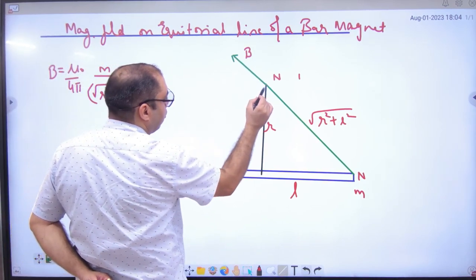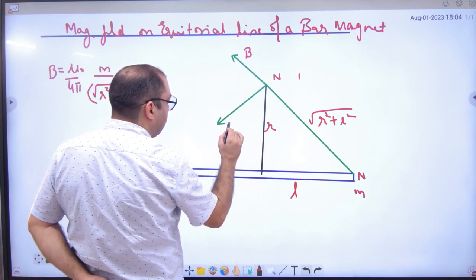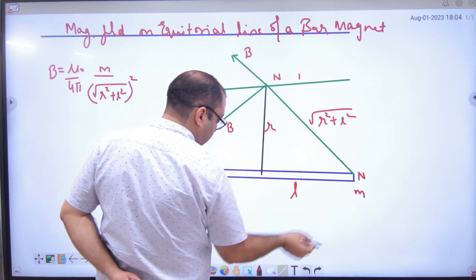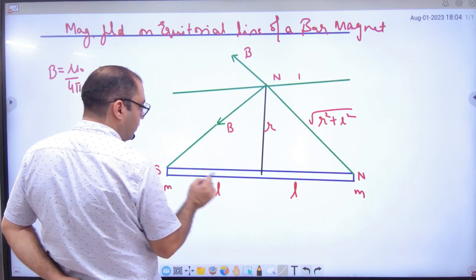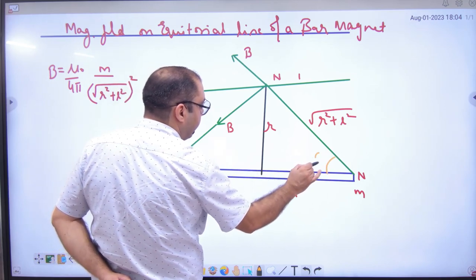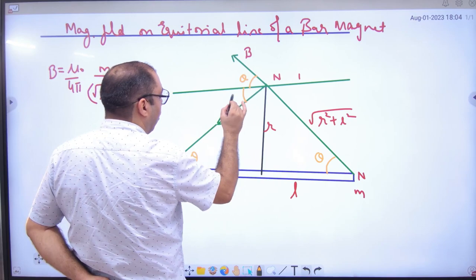this South, this North, what will I have to do? Attract. So here will be B value as well. So here will be B value. So here will draw a line. Such that, here is angle. Such that, here is angle theta. Here is angle theta. Theta, theta corresponding. Theta, theta, alternate.